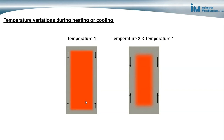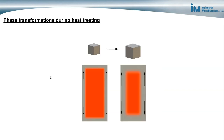There can also be phase transformations during heat treating. This would occur with steels during through-hardening processes such as quenching, austempering, or martempering, and with aluminum alloys during aging heat treatments.